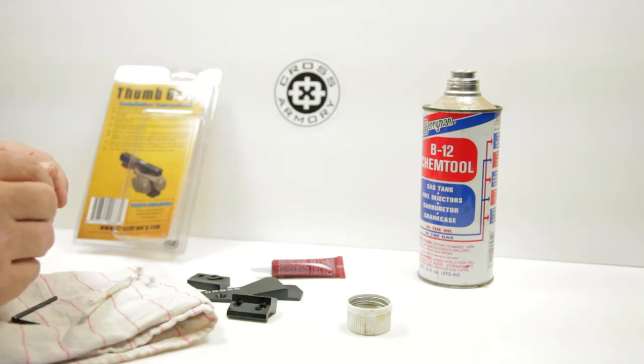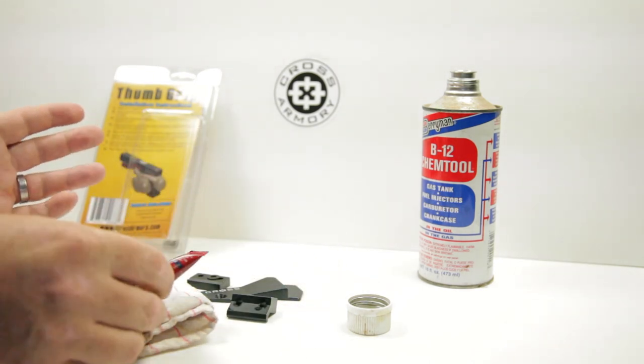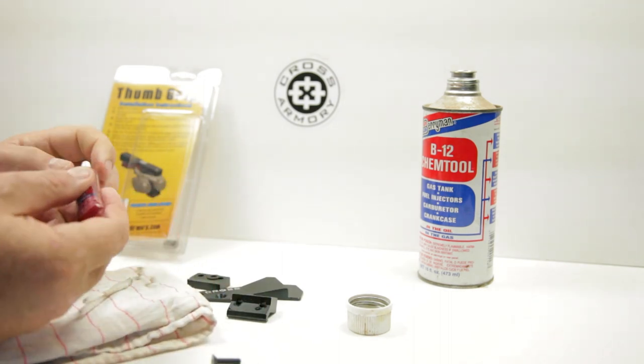Now we are ready to use thread locker. For most applications, Loctite 242, also known as Loctite Blue, is preferred. A little goes a long way, so make sure the excess is removed from the part.